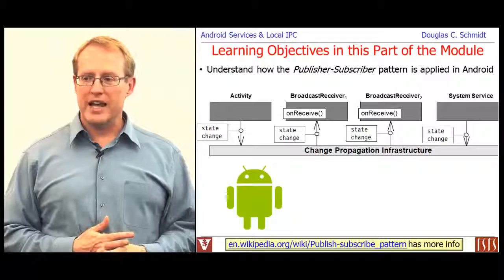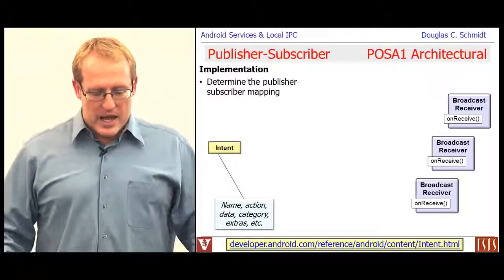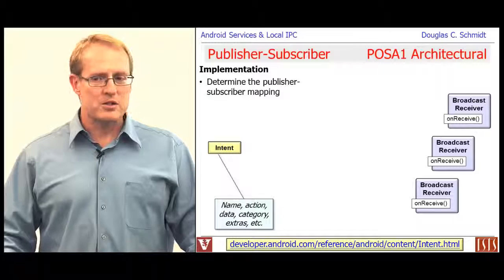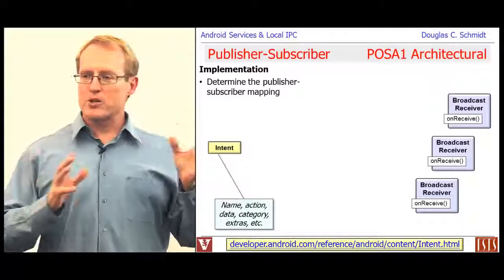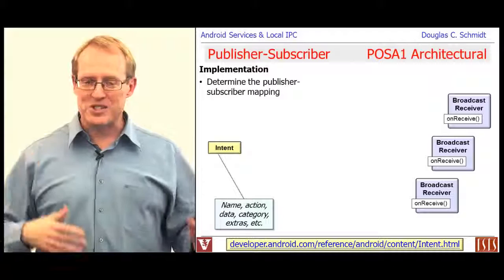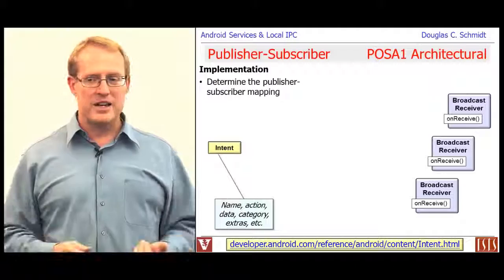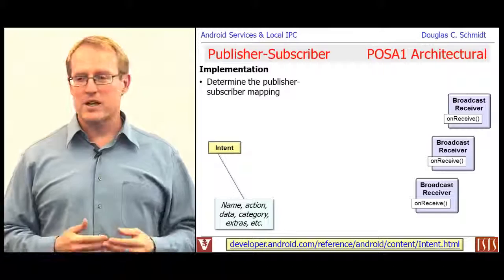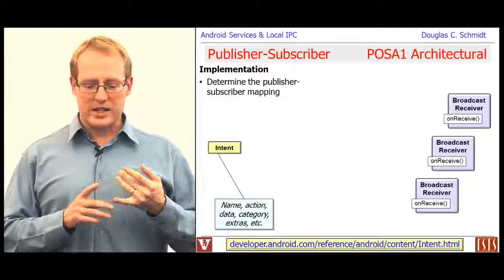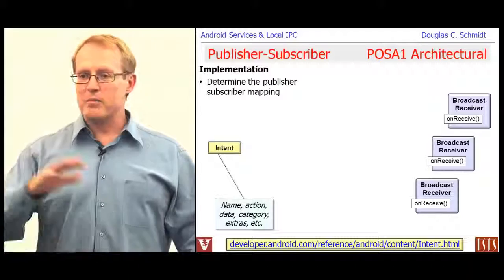Let's talk about how to actually implement publisher-subscriber in Android. There are a bunch of different ways; we'll focus on one part. First you have to define the publisher-subscriber mapping — how do publishers and subscribers interact? In Android, this is done via an intent. The intent keeps track of the action, the data, the extras, the category, etc. That information gets distributed to various receivers. To avoid giving everybody everything all the time, you need filtering to narrow interests to certain topics.